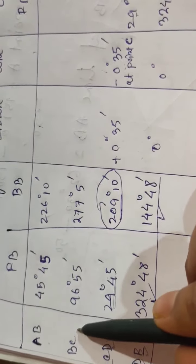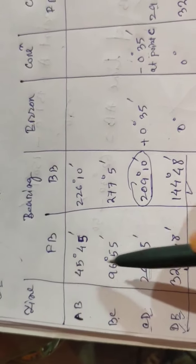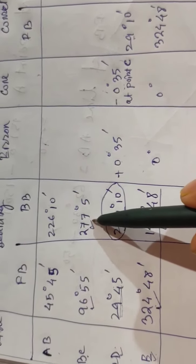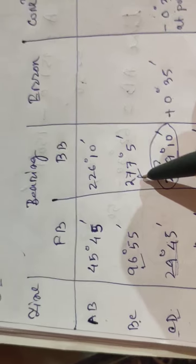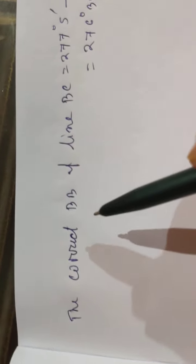This correction is applied at point C, and we must remember to apply it at line BC as well, since it also has point C. Moving to line BC — the reading from point B and the reading from point C — we apply the known correction at point C. The corrected back bearing of line BC equals 277° 05' minus 0° 35', which comes out to 276° 30'.